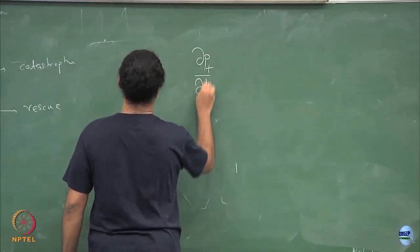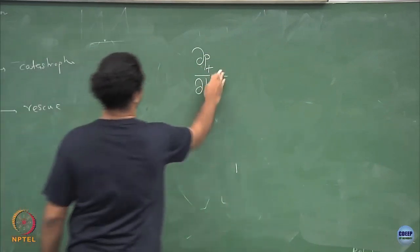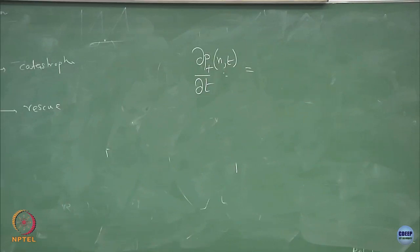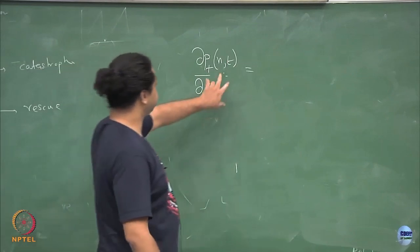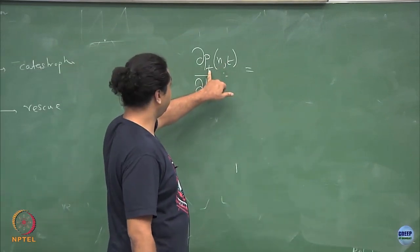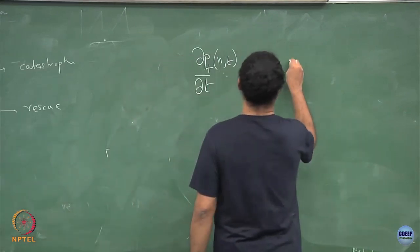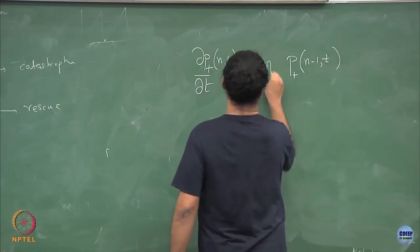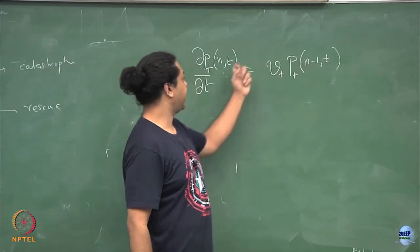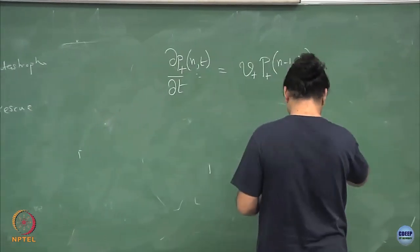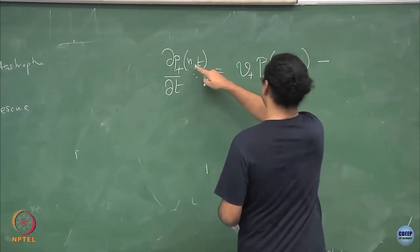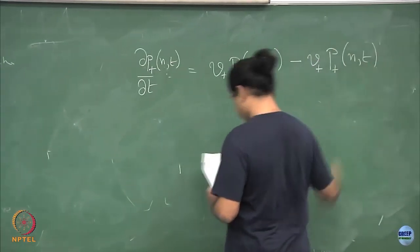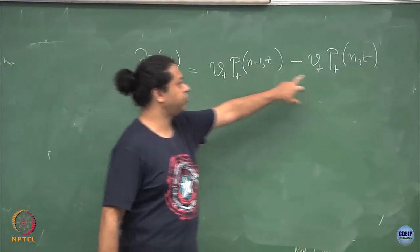Let me write dP-plus/dt. To be specific, this is P-plus of n comma t. From what state can I reach this n, t? If my microtubule was in the growing state, then it can have added a monomer, so I can have come to this state from the n-minus-1 state at rate V-plus. It was n-minus-1, it added a monomer, it came to n. And similarly it can go from n to n-plus-1, which is a loss term, so again minus V-plus times P-plus of n, t.